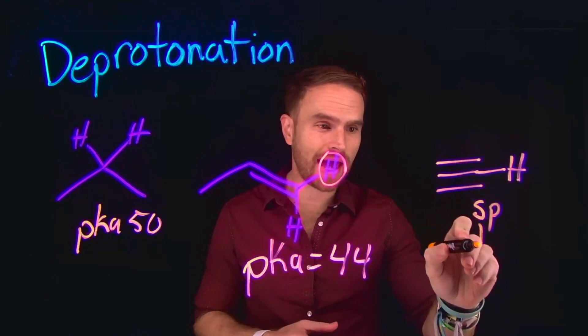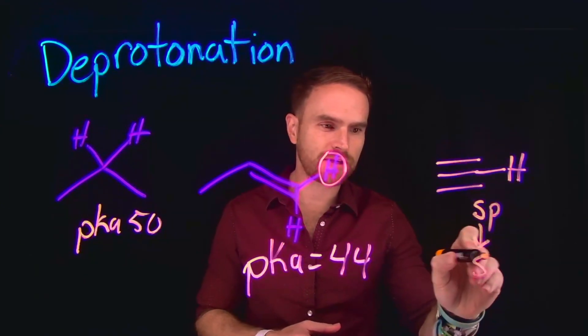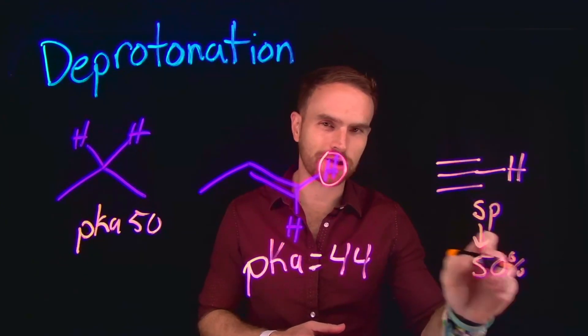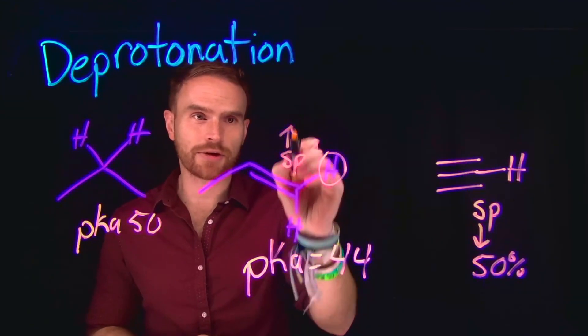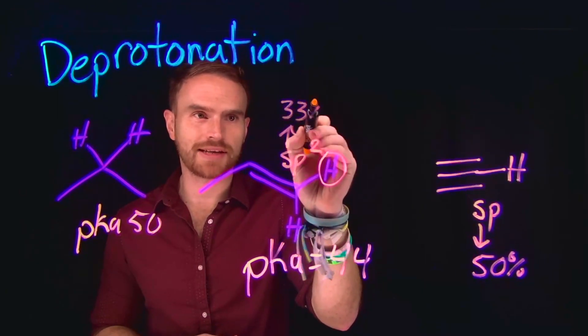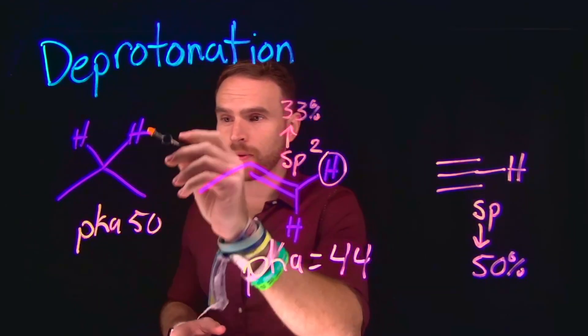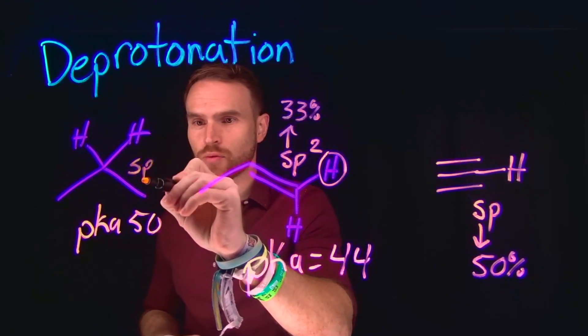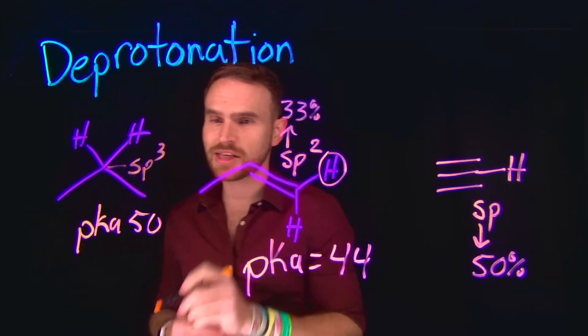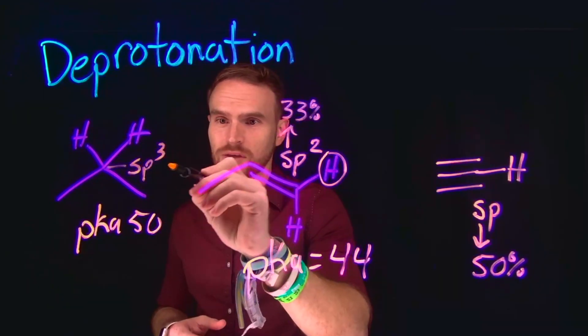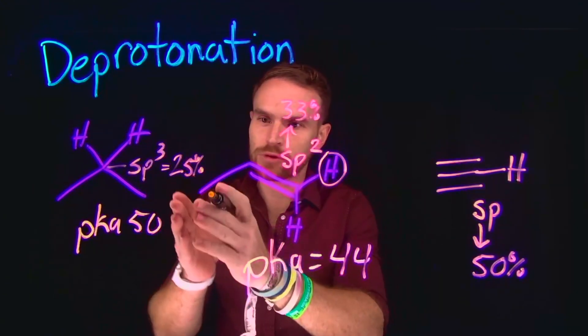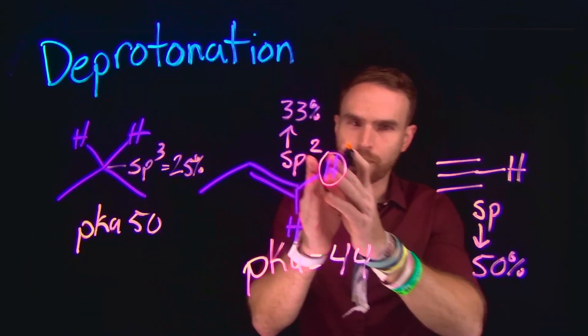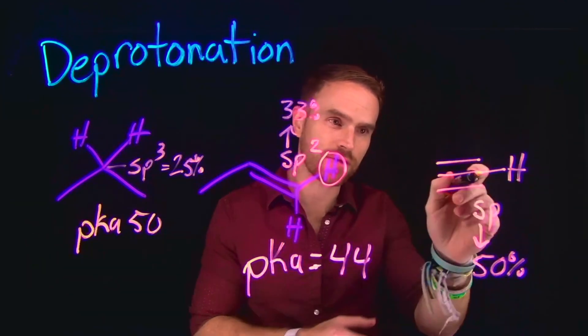And that means that the S orbital makes up about 50% of that hybridization. Whereas this carbon is SP2 hybridized, meaning that this S character is about 33%. And for an alkyl carbon hydrogen, this is SP3 hybridized at this carbon position, which means that the S character is only about 25%.